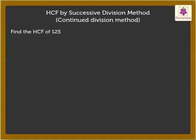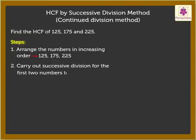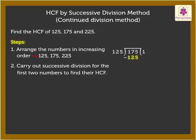Let us solve another example by Successive Division Method. Find the H.C.F. of 125, 175, and 225. Step 1: Arrange the numbers in increasing order. Here, the numbers are already arranged in increasing order. Step 2: Carry out successive division for the first two numbers and find their H.C.F. The first two numbers are 125 and 175. We know 125 × 1 = 125, and 175 − 125 gives the remainder 50.